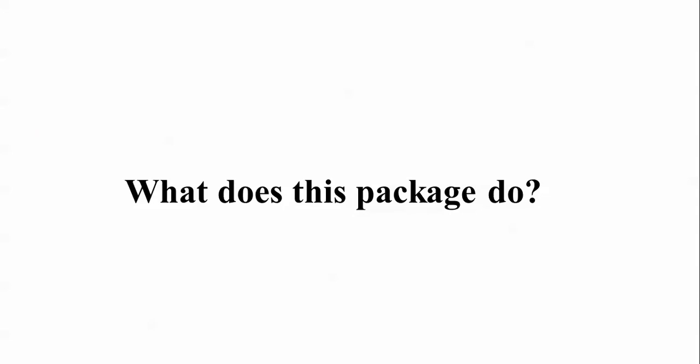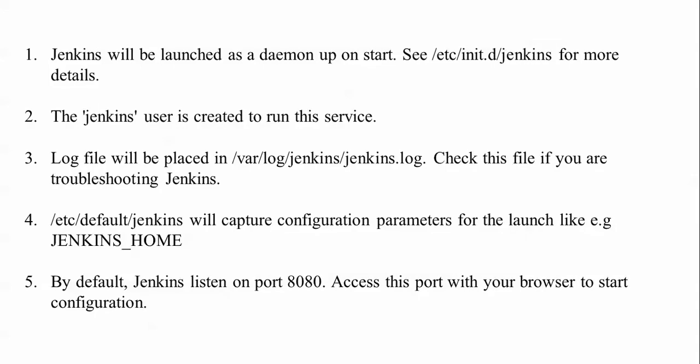Jenkins will be launched as a daemon on startup. When the system reboots, Jenkins will start automatically. The configuration file is located at '/etc/init.d/jenkins'. A Jenkins user is created to run the server. Log files are placed at '/var/log/jenkins/jenkins.log'. If you get any errors you can check that log file for troubleshooting. The configuration parameters are captured in '/etc/default/jenkins', including the JENKINS_HOME setting.